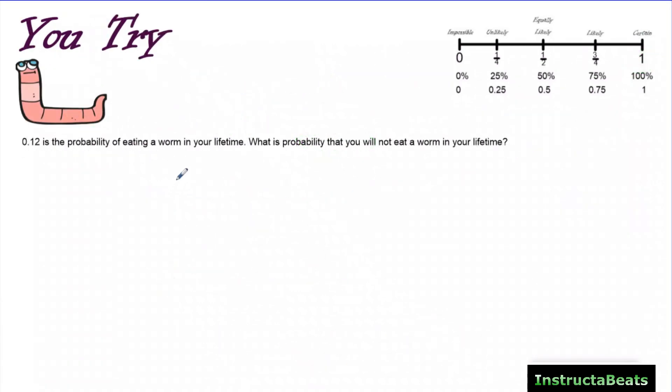Let's try a You Try problem. So it says 12/100 is the probability of eating a worm in your lifetime. What is the probability that you will not eat a worm in your lifetime? Now, I just want to pause real quick to remind you that we typically write probabilities using ratios, and we write them in fraction form. And because we write them in fraction form, you can write the ratios as a percent or a decimal. So this is saying 12/100. What it's really saying is if you live 100 lifetimes, in 12 of those, you would end up eating a worm. So the question says, what is the probability that you will not eat a worm? In other words, what is the complement for the event of eating a worm in your lifetime? So go ahead and pause the video, push play when you're ready, check your work, and you can check your mastery.